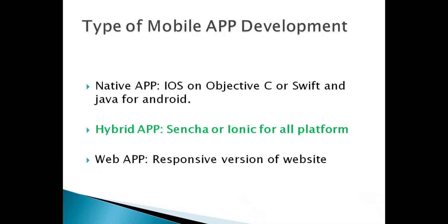So basically there are three types of mobile app development. First is the native app. In native app we write code in different languages — for iOS we write code in Objective-C and for Android we write code in Java.